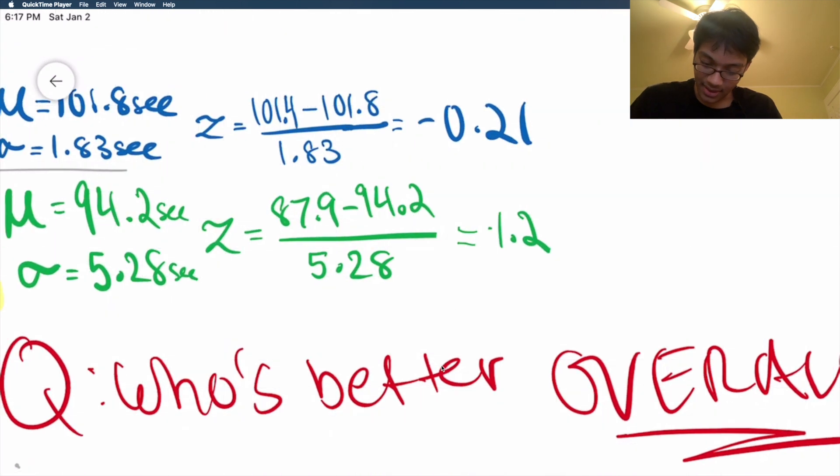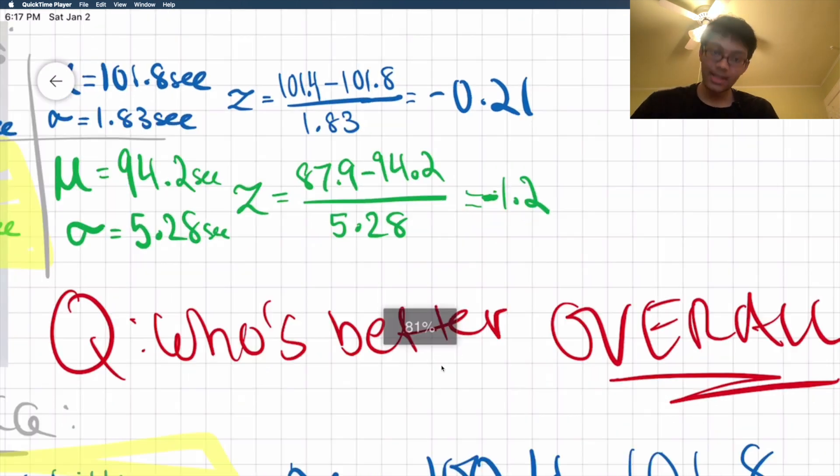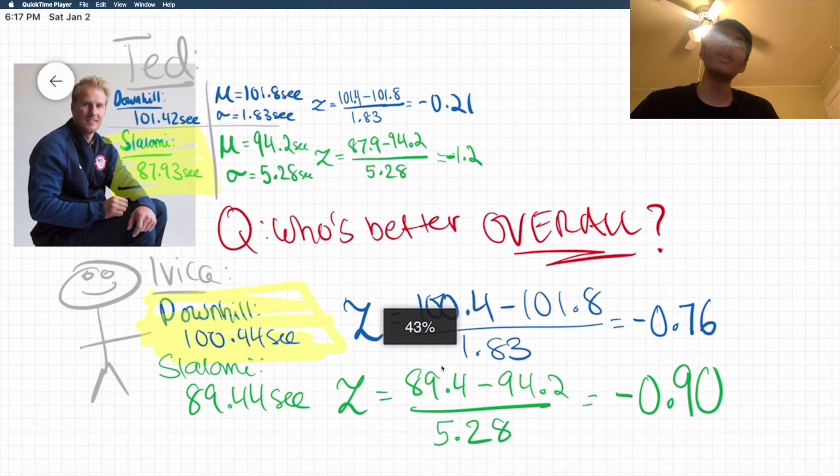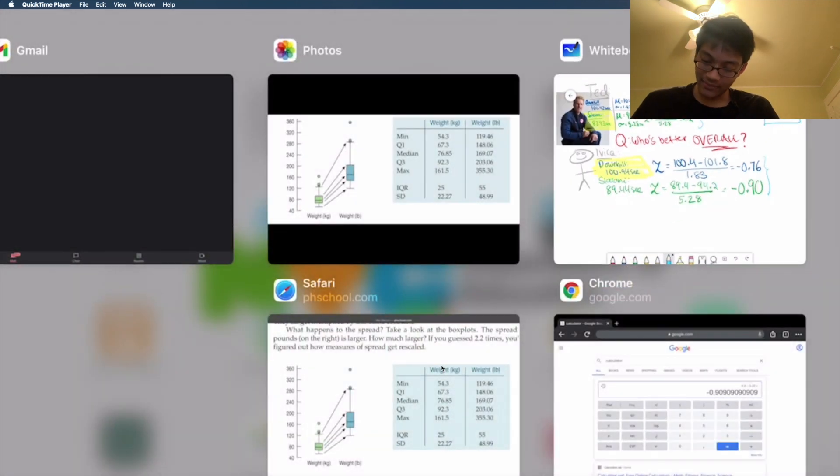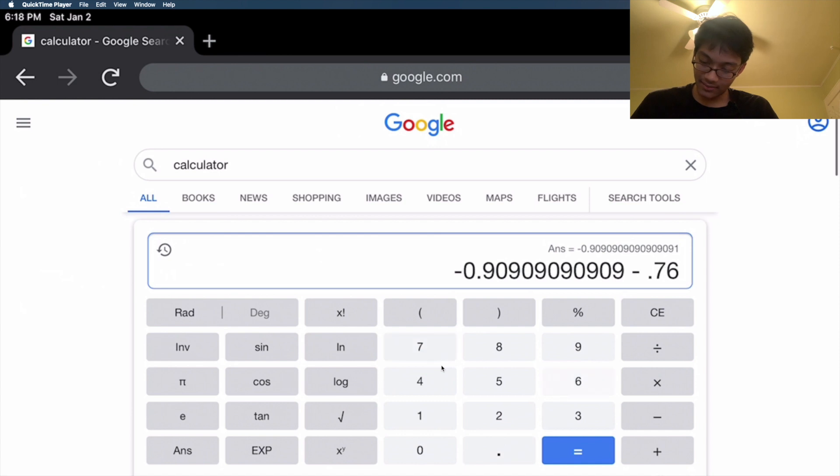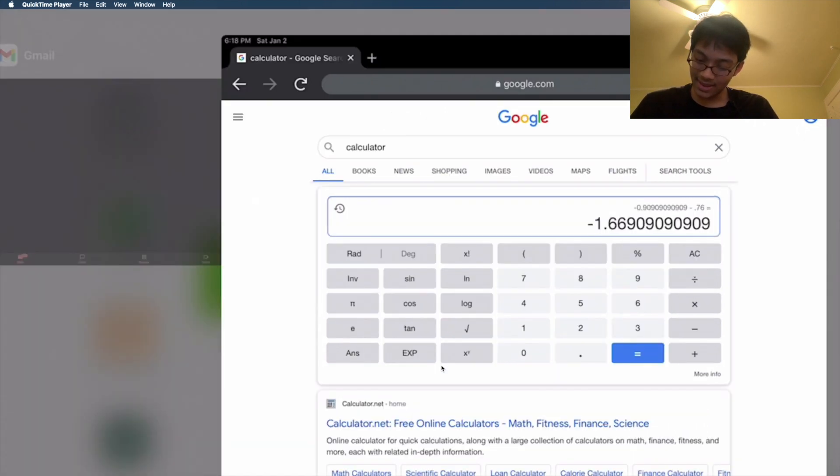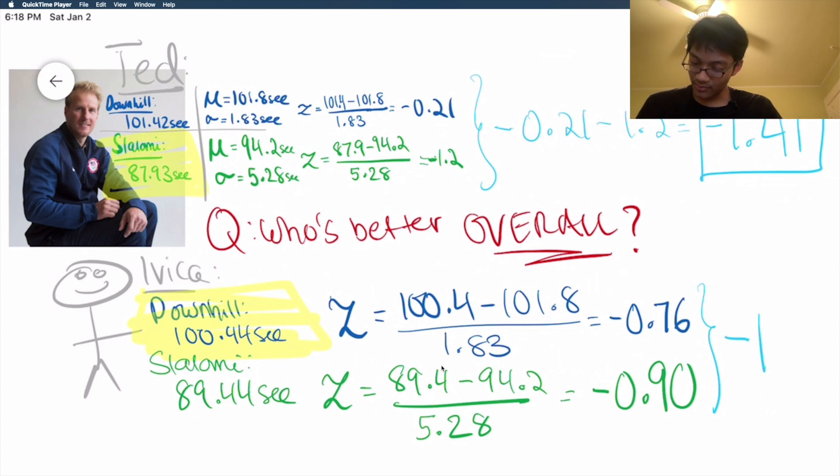So how do we compare these two guys? Who's better? Who's gonna win the gold medal? Well, we're gonna add up their z-scores. Let's add up their z-scores. So if we add up Ted's z-scores, what are we gonna get? We're gonna get minus 0.21 minus 1.2, and what's that gonna be? Well, that's gonna be minus 1.41. That's Ted's total z-score. And how about for Ivica? Well, for Ivica, we're gonna add these two up. So minus 0.76, and for Ivica we get minus 1.66. That's Ivica's total score.